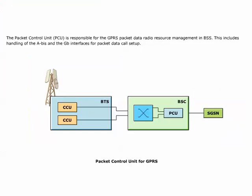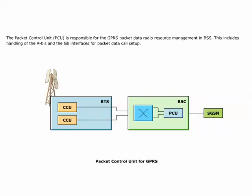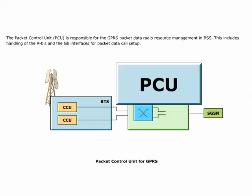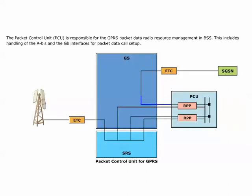The packet control unit, PCU, is responsible for the GPRS Packet Data Radio Resource Management. PCU is responsible for handling the ABIS and the GB interfaces for packet data call setup. The GB interface is terminated in the PCU. The PCU consists of both central software, CP, and hardware devices with regional software, RP. It will have one or more regional processors, RPP. An RPP can work towards both the GB and the ABIS interface, or towards ABIS only. The function of the RPP is to distribute PCU frames between GB and ABIS.